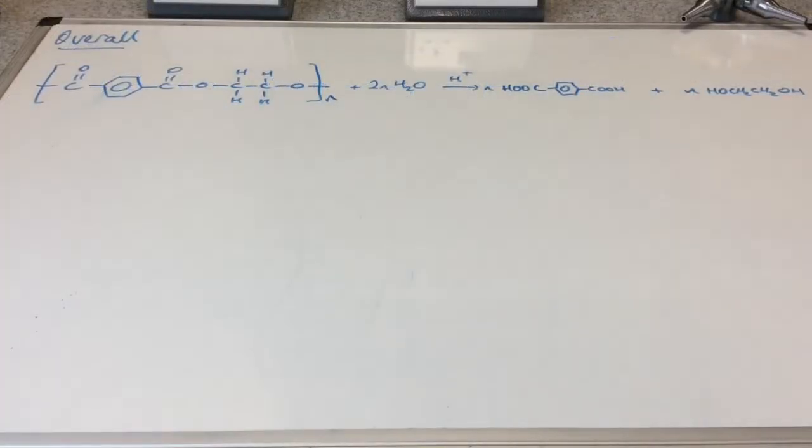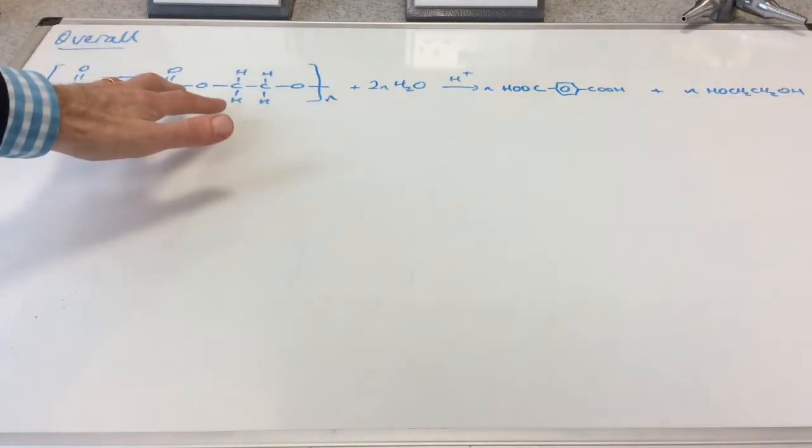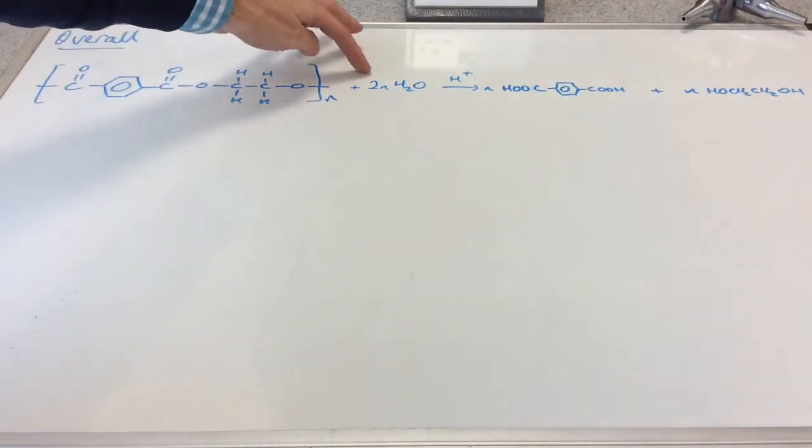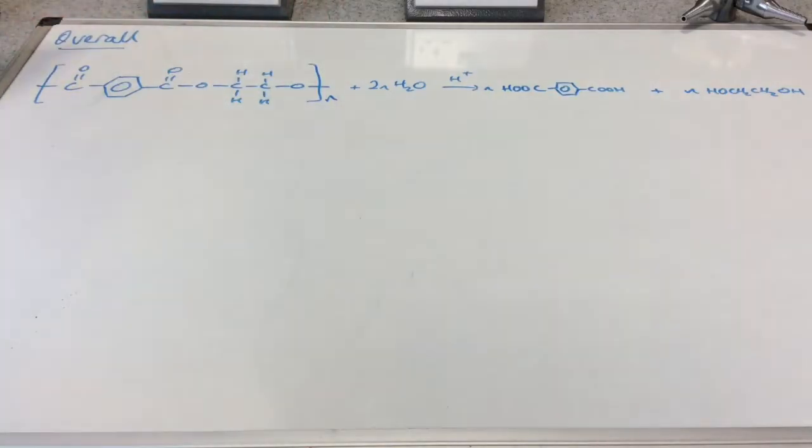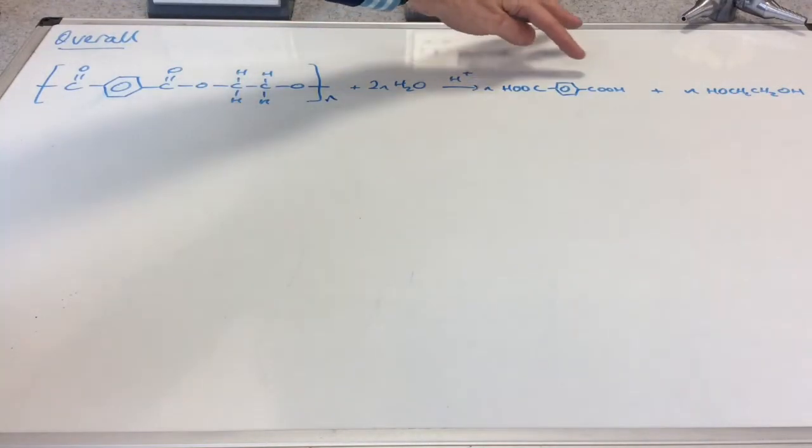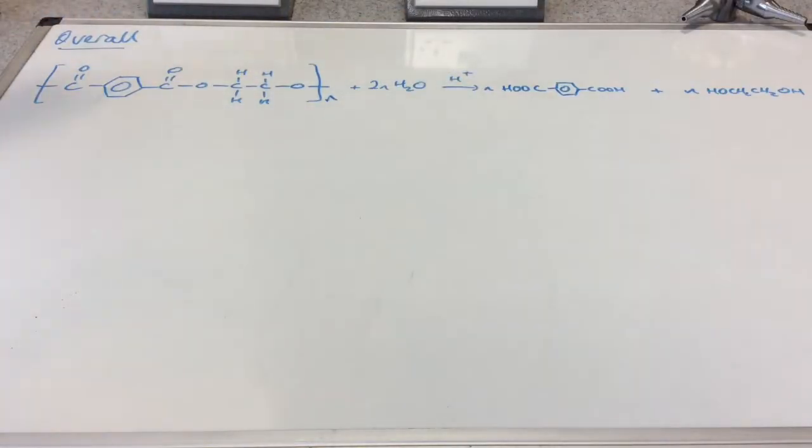You can see I've written up the overall equation there now. We've got N moles of the polymer terylene. Requires two N moles of water. There's the reference to the fact that it's acid hydrolysis, so I'm putting the H+ above the arrow. And I'm making N moles of the dicarboxylic acid and N moles of the diol.